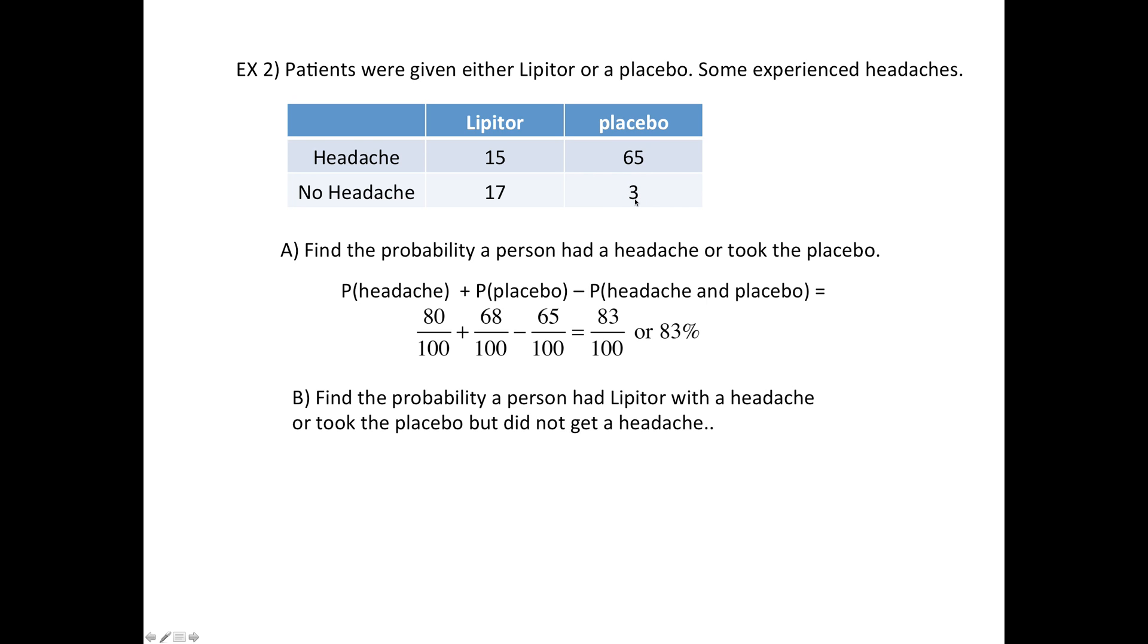In this case there is no overlap. These two are distinct—it's either these 15 people or these 3. So we just need to do the two separately: 15 out of 100, 3 out of 100, makes 18 out of 100, or 18 percent.